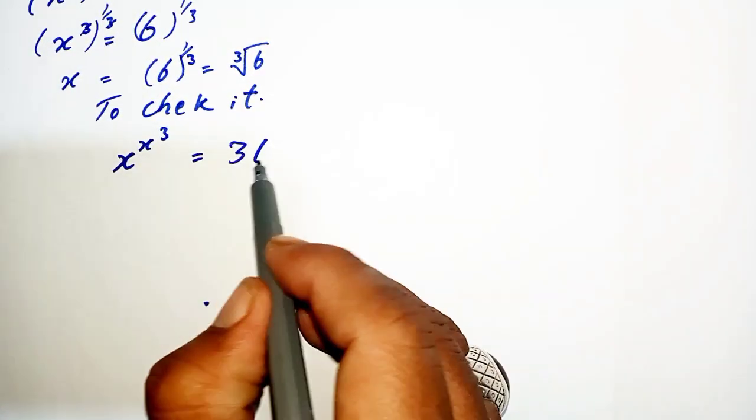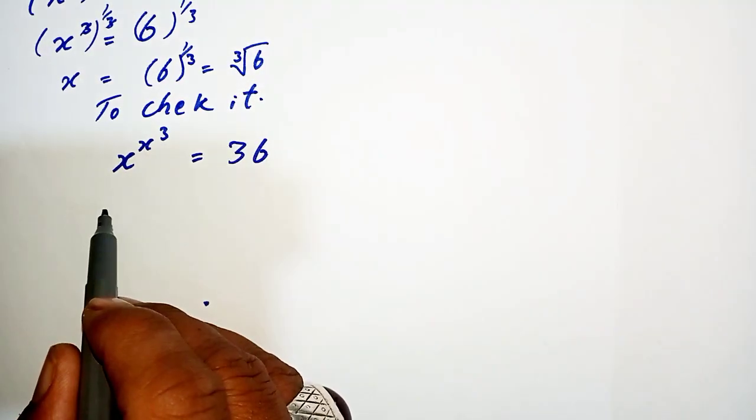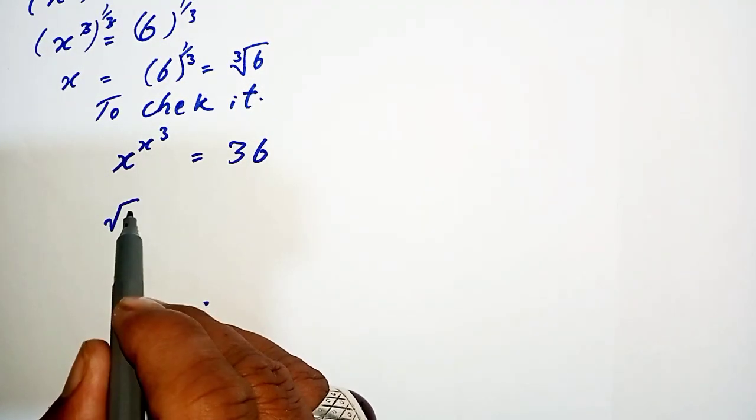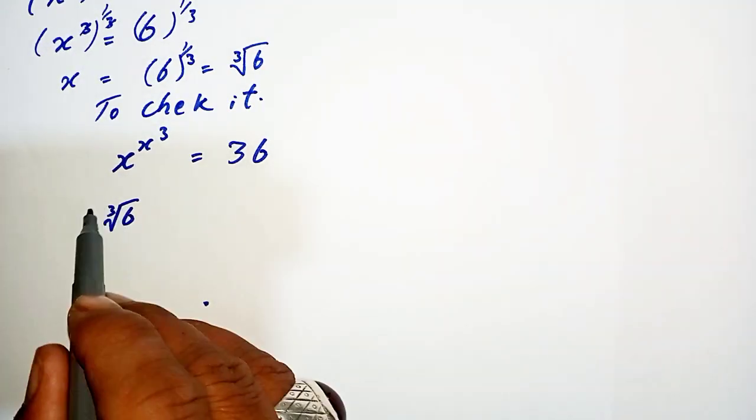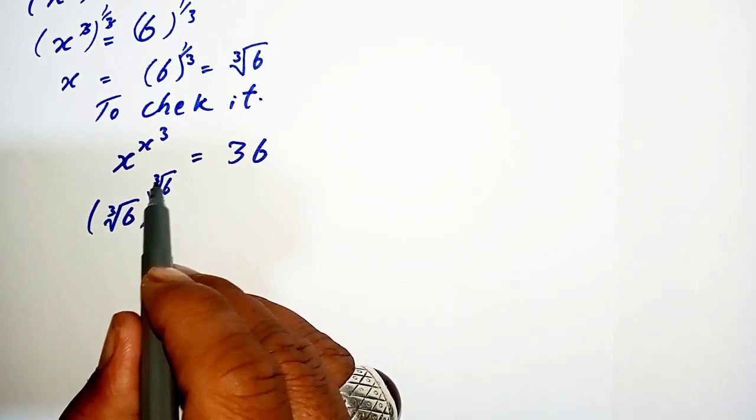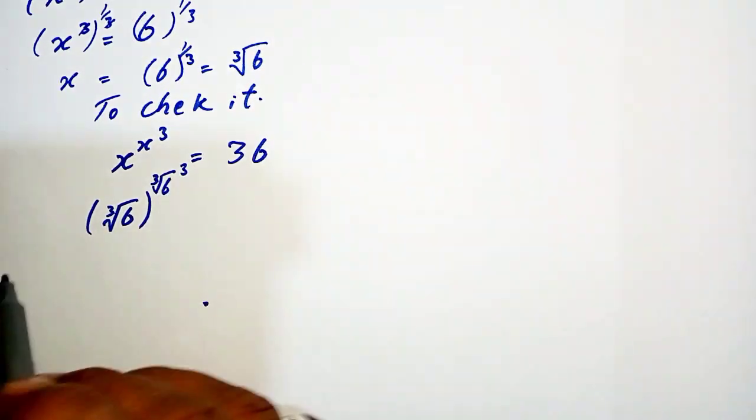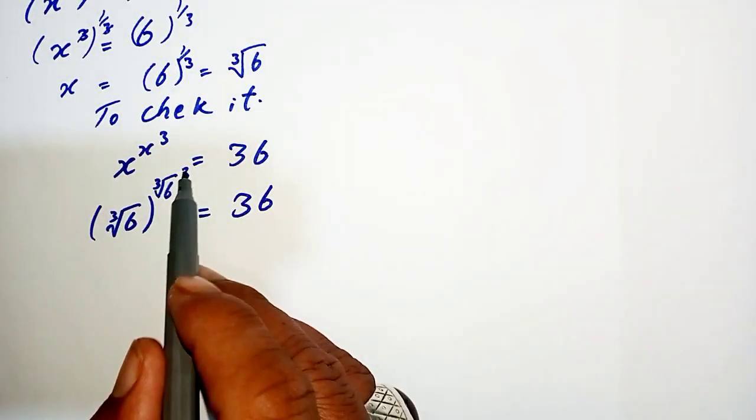Our question is that x^(x^3) = 36. It is equal to 36, so we put this value of x: (6^(1/3))^((6^(1/3))^3). It would be equal to 36.